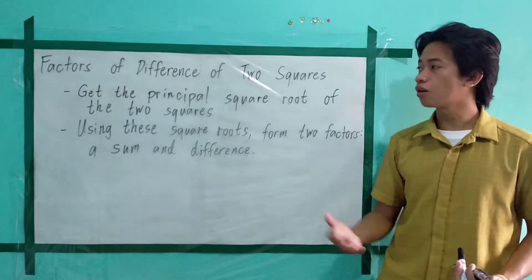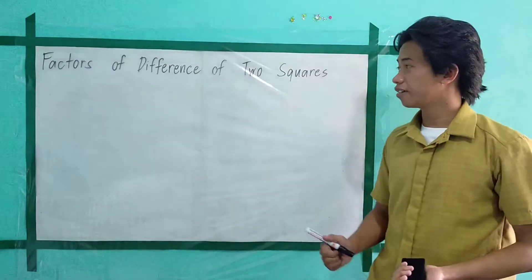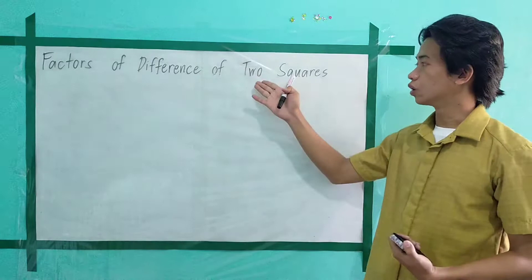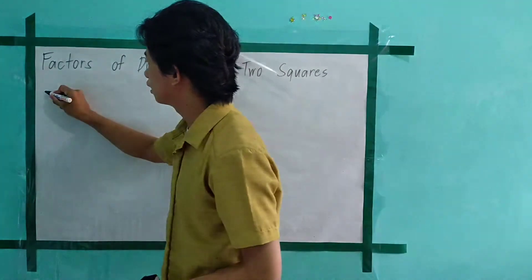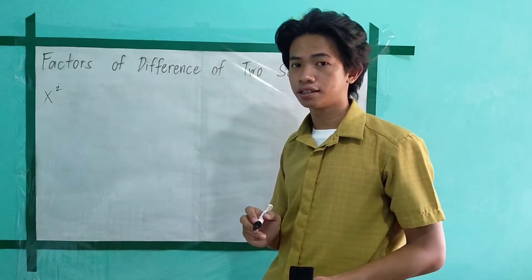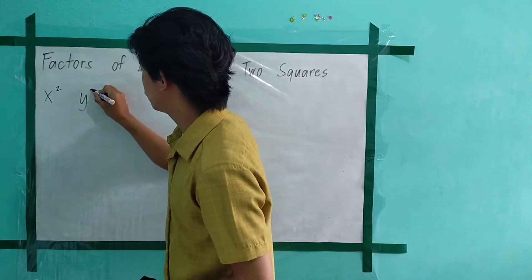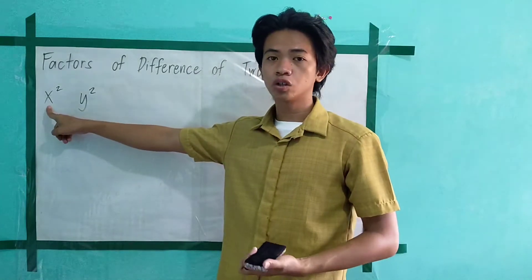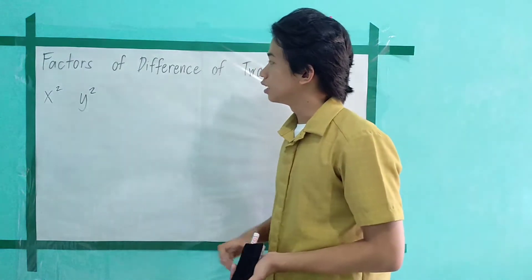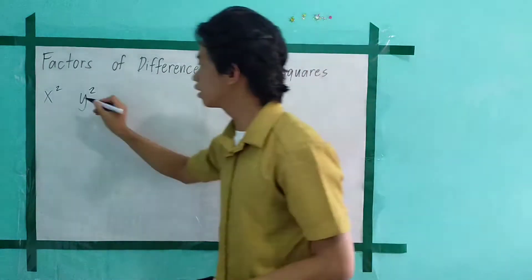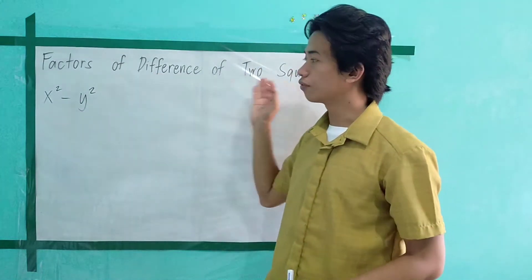Let us proceed to the form of difference of two squares. We have two squares and the operation we use is subtraction. Let us illustrate this — let's say our first term is x², so we have one square. And another term is y², so we have two squares: x² and y². Then, since it's a difference, we place a subtraction sign between the two terms. So this is what we call the difference of two squares.